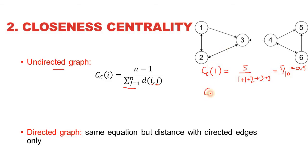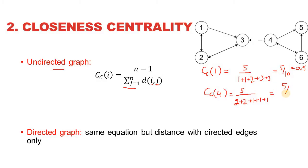Now let's calculate it for node 4. At the numerator we have 5. Node 4 is at a distance of 2 from nodes 1 and 2, and at a distance of 1 from nodes 3, 5, and 6. That gives us 5 divided by 7 as the closeness centrality of node 4.